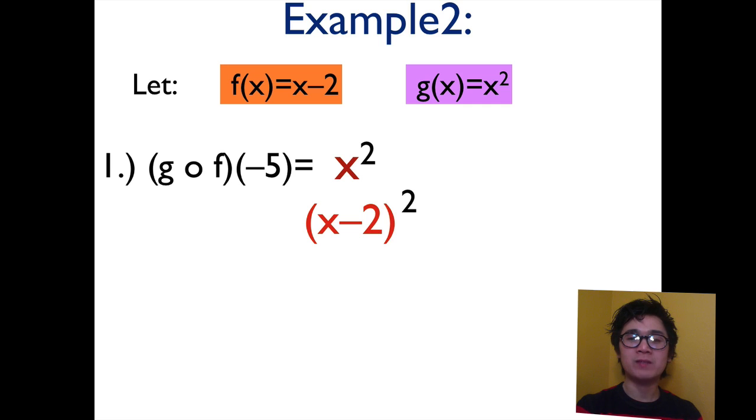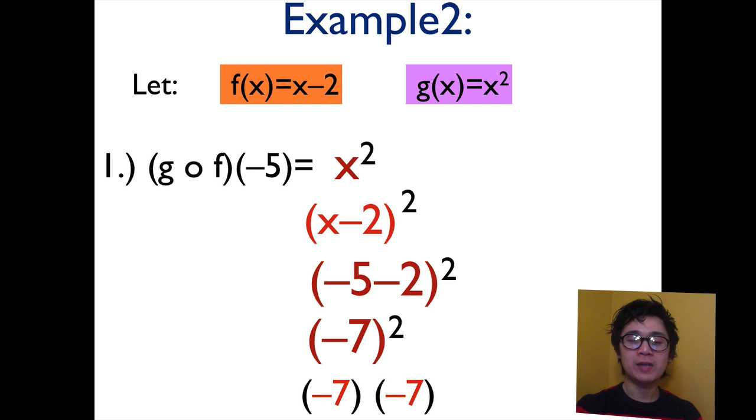Now that we have replaced the value of x by x minus 2, we can replace x on x minus 2 squared by negative 5. And simplifying this expression, negative 5 minus 2 is negative 7. And negative 7 squared is simply negative 7 times negative 7, which is equal to 49. So g of f of negative 5 is equal to 49.